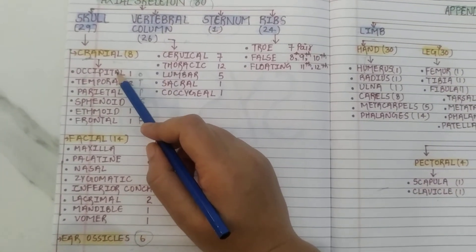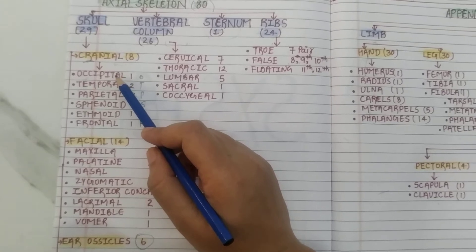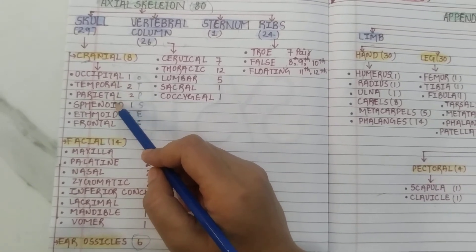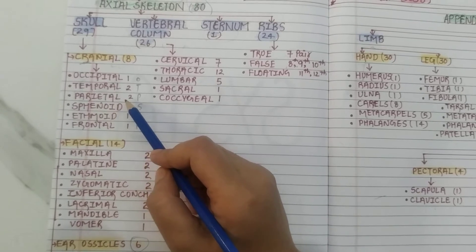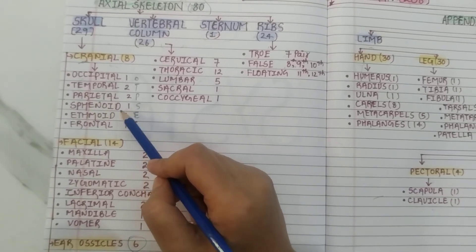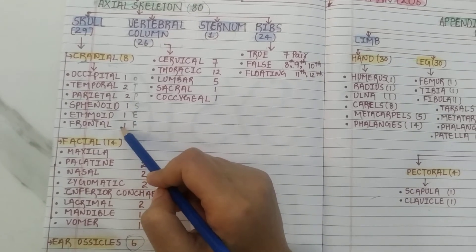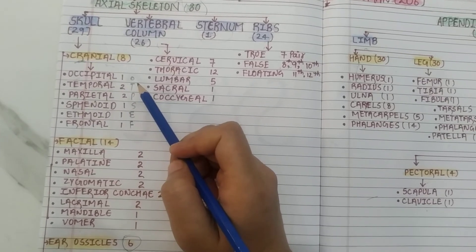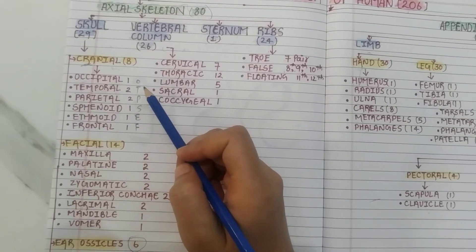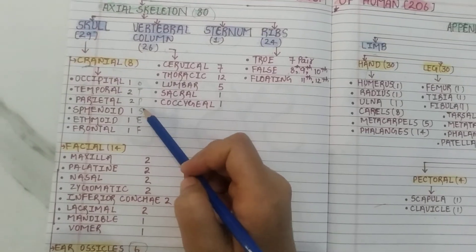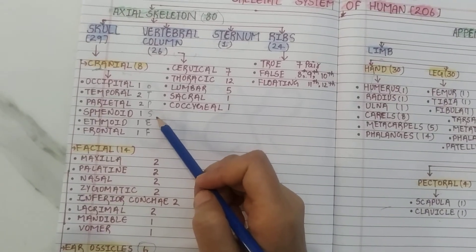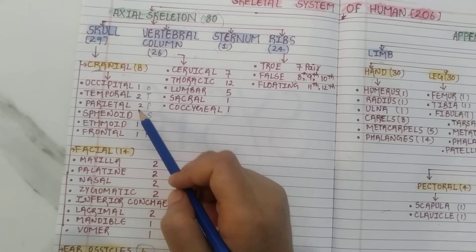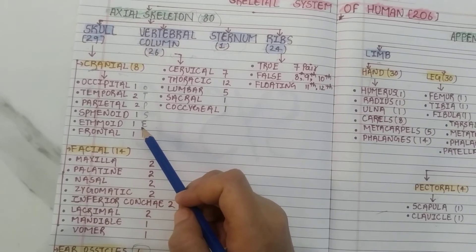The cranial bones, which contain our cranium, are 8 bones: occipital (1), temporal (2), parietal (2), sphenoid (1), ethmoid (1), and frontal (1). To remember these, we can use a mnemonic OTP — 'OTP safe' — where the spelling helps us recall the bones. We can also remember them by the pattern 1, 2, 2 and 1, 1, 1.